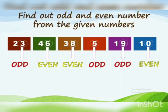Next is 19 — 9 is at one's place, so 19 is an odd number. Next is 10 — 0 is at one's place, so 10 is an even number.